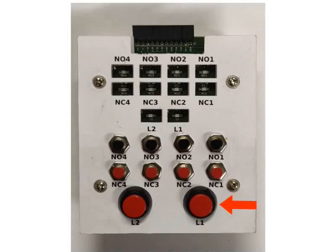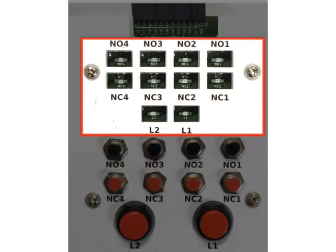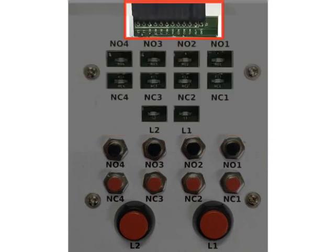At the bottom, we have 2 latched action switches. Above that, we have 4 normally closed switches and then 4 normally open switches. Above these switches, we have LEDs corresponding to each switch. The LEDs are arranged in the same order as the top switches, and each LED glow indicates a corresponding switch press.